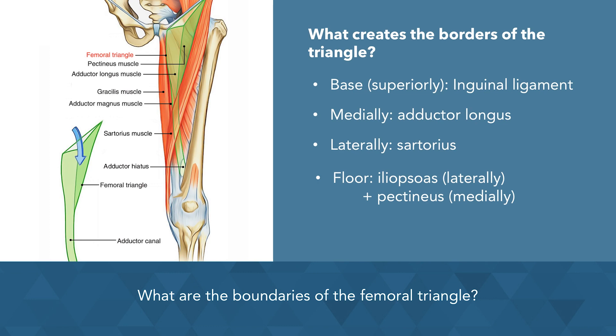What about the roof? The roof is a little bit tricky. The roof of the femoral triangle is created by the fascia lata and it has a saphenous opening. The superficial fascia overlying the roof includes the superficial branches of the femoral artery, its accompanying veins, the upper part of the great saphenous vein, the superficial inguinal lymph nodes, femoral branch of the genitofemoral nerve, and the branches of the inguinal nerve. It's enough to know that the fascia and subcutaneous tissue create the roof.